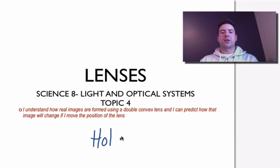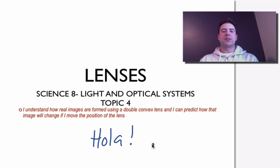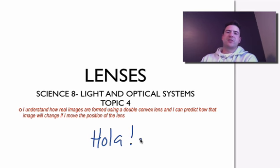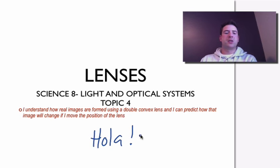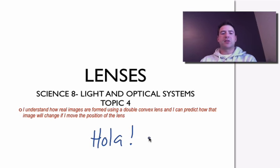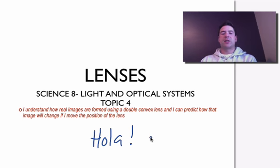Hi guys, Mr. Sonnenberg here. Today we're going to be talking about lenses, and this is for science students studying light and optical systems. You'll find this information in Topic 4 of your textbook. The specific outcome we're going to be dealing with is: I understand how real images are formed using a double convex lens, and I can predict how the image will change if I move the position of the lens.